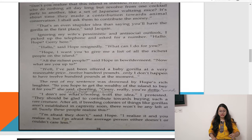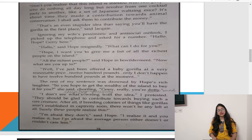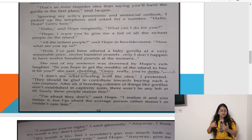'Hello, Hope — Jerry here.' 'Hello,' said Hope resignedly. 'What can I do for you?' 'Hope, I want you to give me a list of all the richest people on the island.' 'All the richest people! What are you up to?' 'Well, I've just been offered a baby gorilla at a very reasonable price — 1,200 pounds — and I don't happen to have 1,200 pounds at the moment.' The rest of his sentence was drowned by Hope's rich laughter.